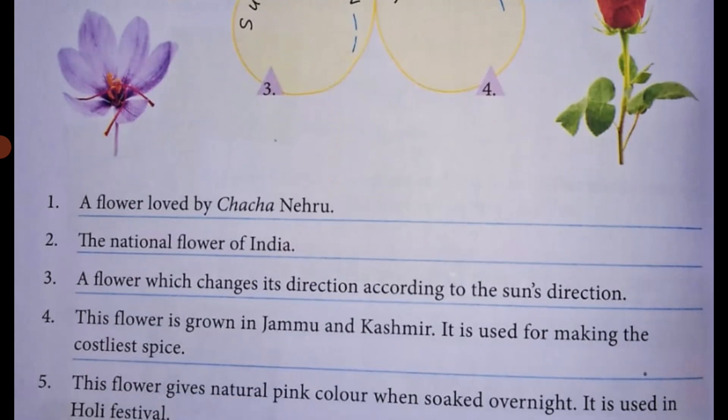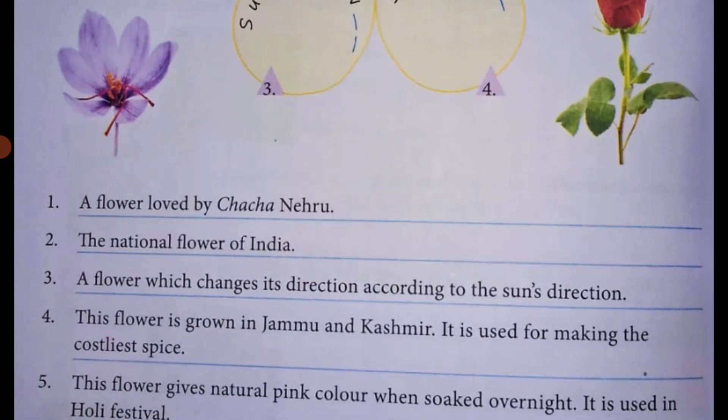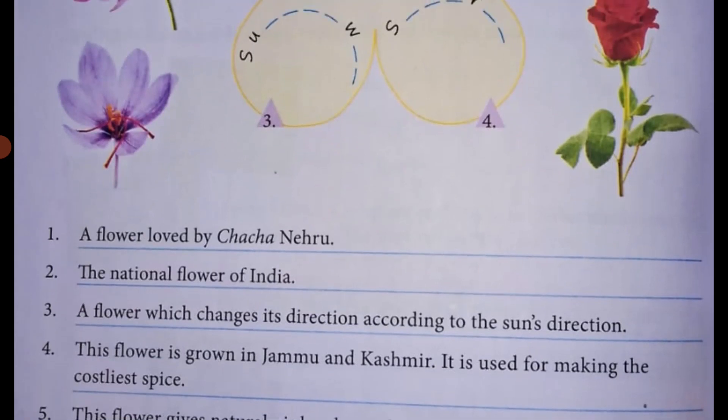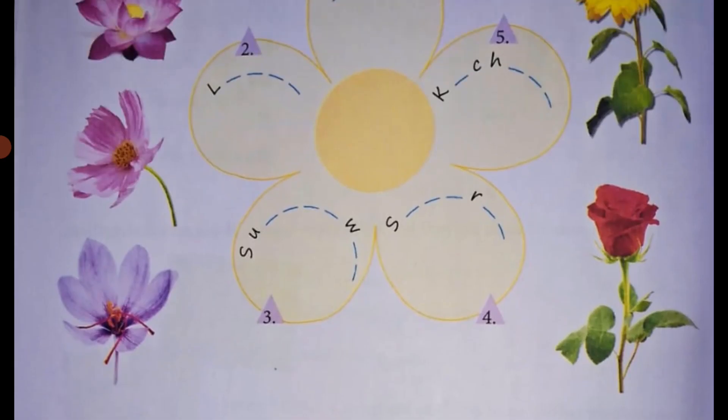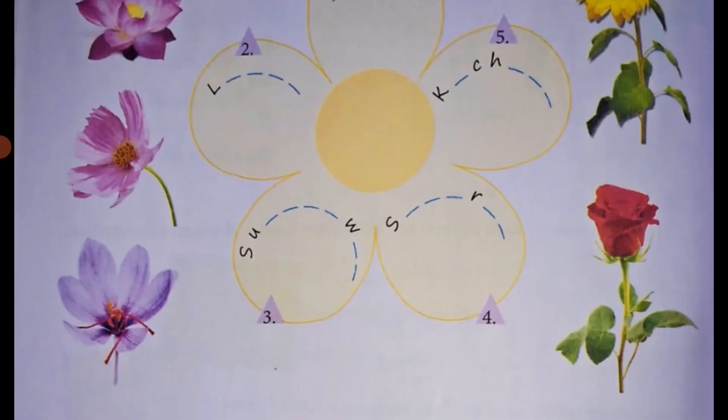Fourth, the flower is grown in Jammu and Kashmir. It is used for making the costliest spice. The answer is Saffron.